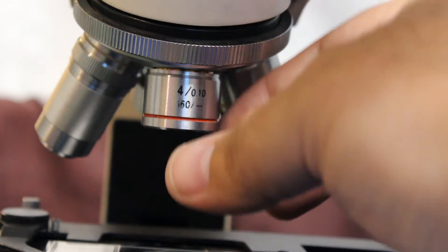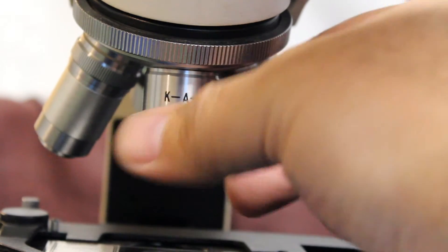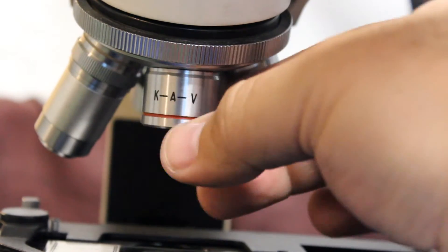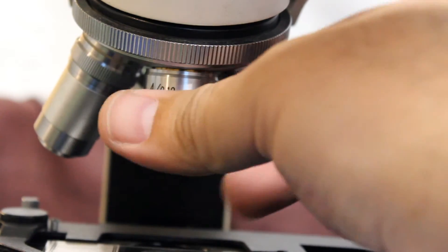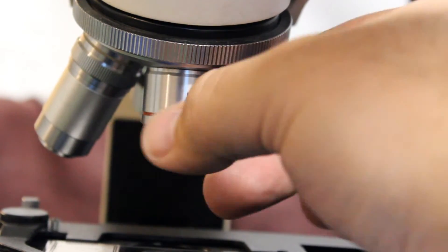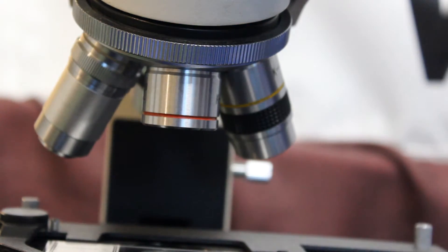This is a DIN objective. It won't always say DIN or D-I-N on it but you'll notice that nowhere on the objective does it say plan or P or semi plan or SP. Typically these are not marked or they'll say Achromat, but if it's a plan objective it'll say plan.